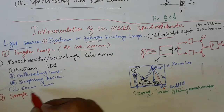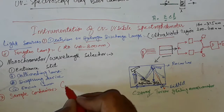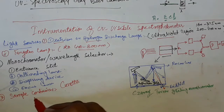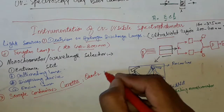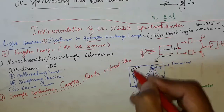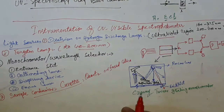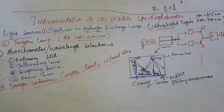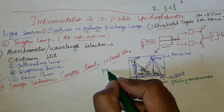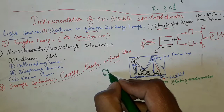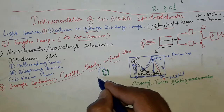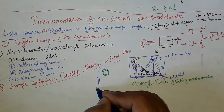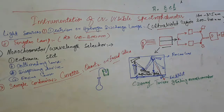The next important component is the sample container. Sample containers are also called cuvettes. They are made of quartz or fused silica, not of glass, because glass may absorb radiation in the ultraviolet-visible region. They are extremely costly, so during handling these cuvettes must be used with caution. The sample solution is transferred into the cuvettes for analysis and then they are placed in the cuvette holders.